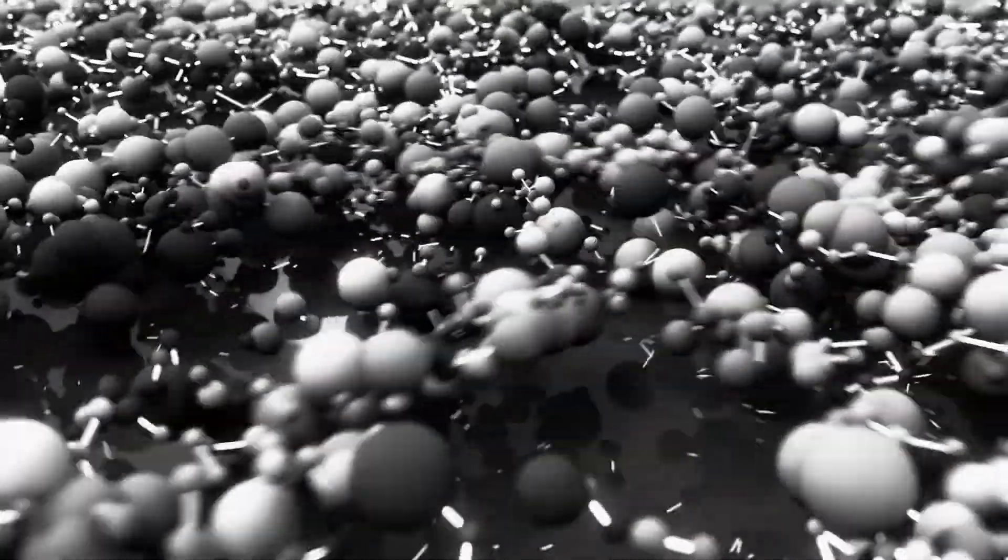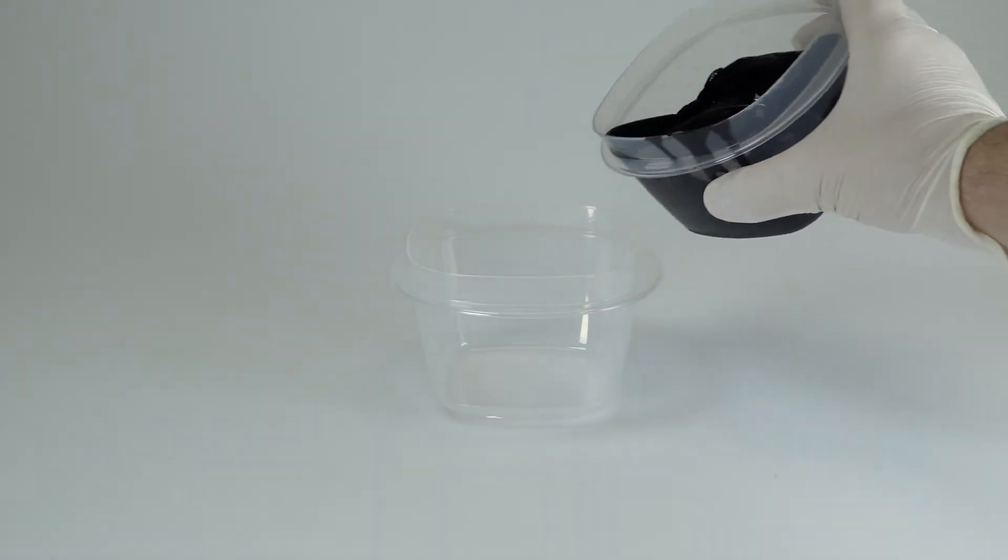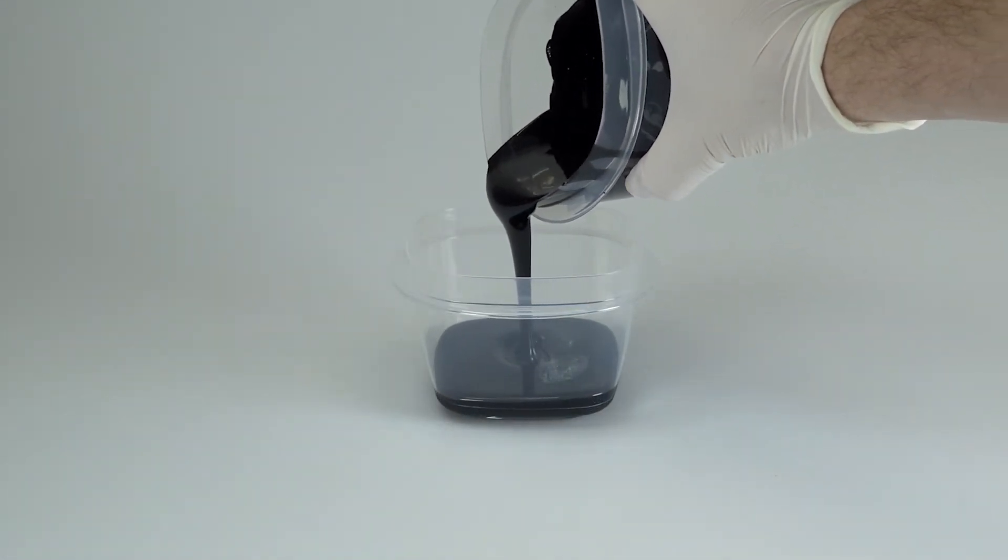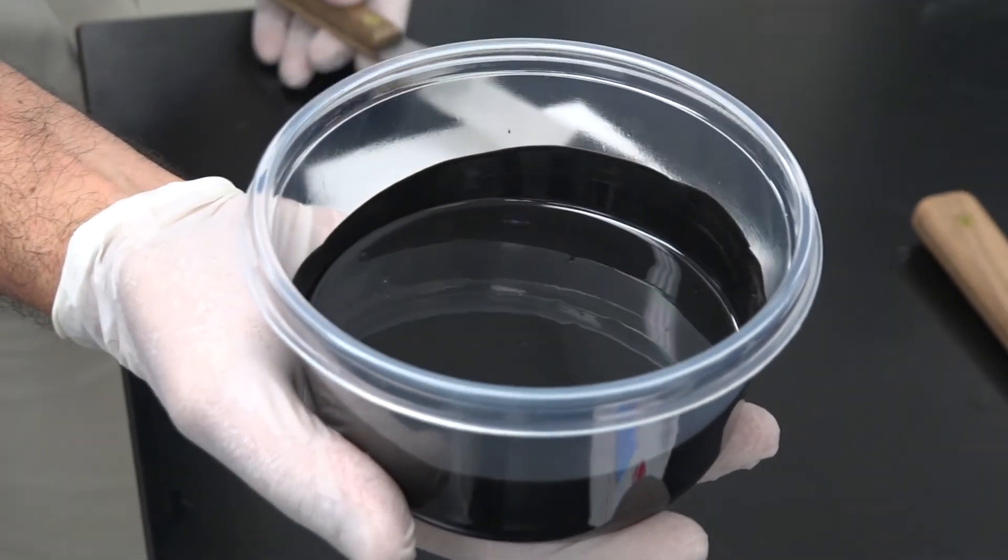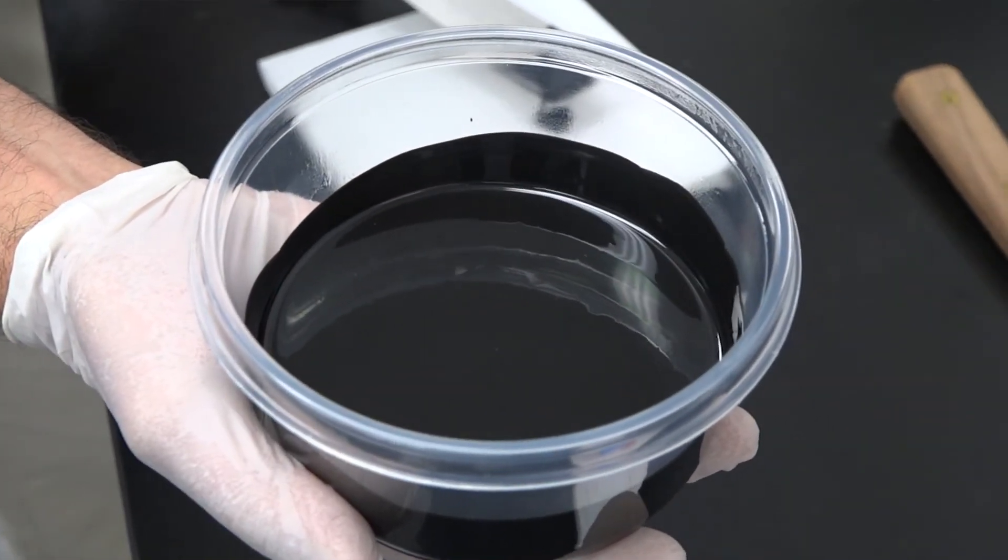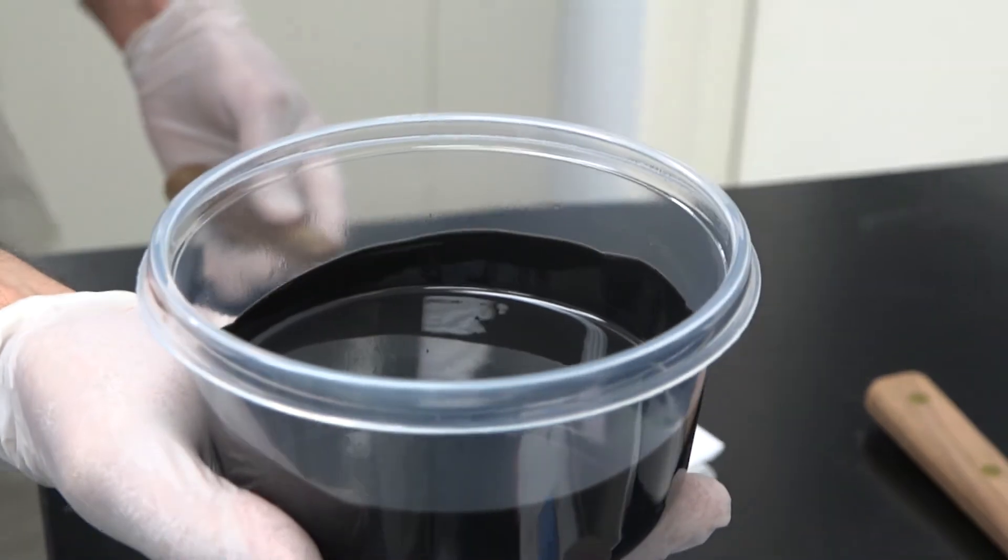A useful technique to make sure unmixed material does not get hung up on the walls or bottom of the mixing container is to transfer the mixed material into a second container and mix again. You should be ready to use your potting compound or adhesive when there are no streaks or pooling and the color is consistent throughout.